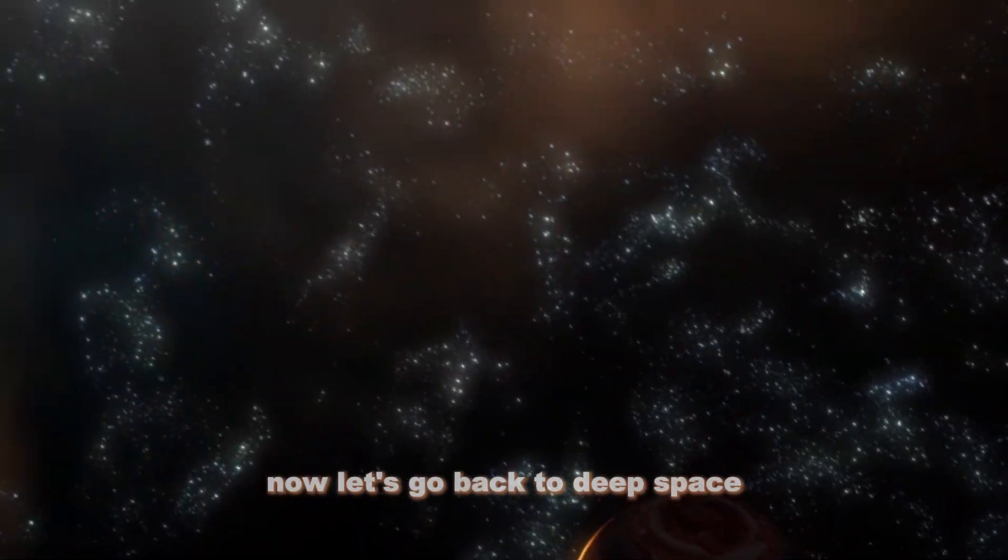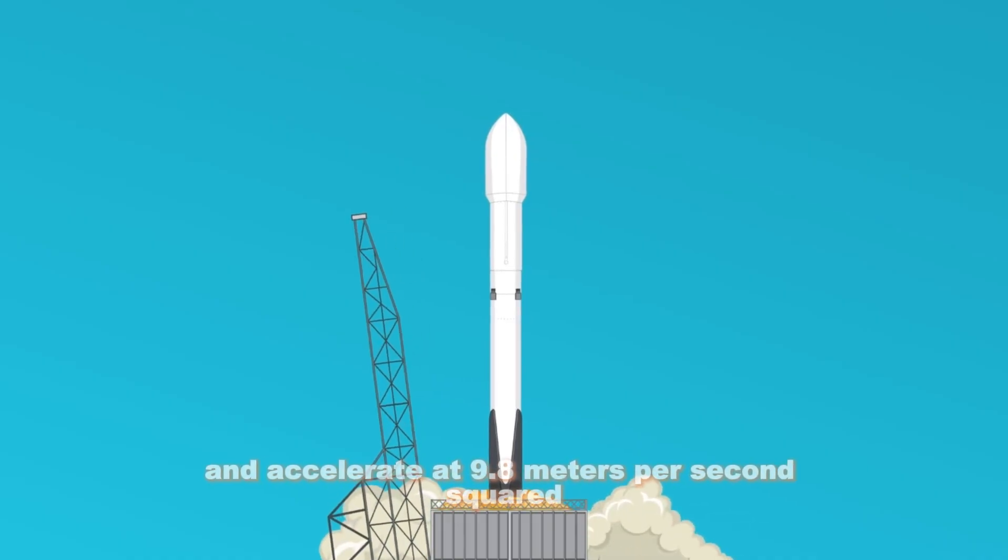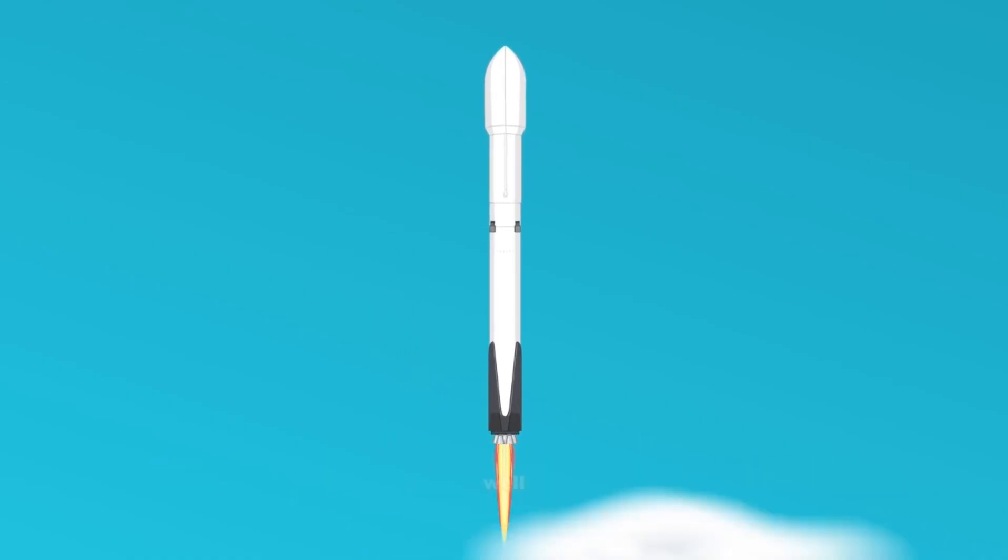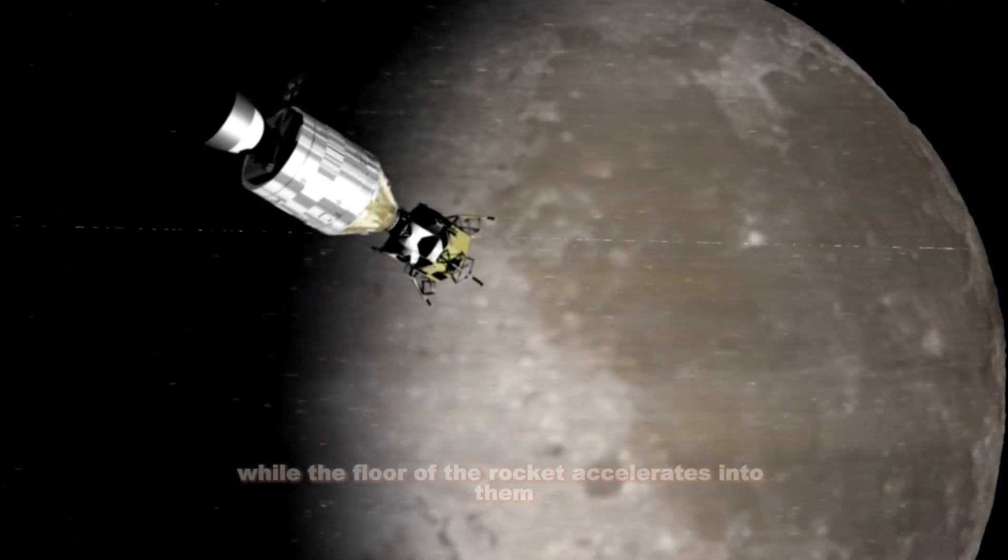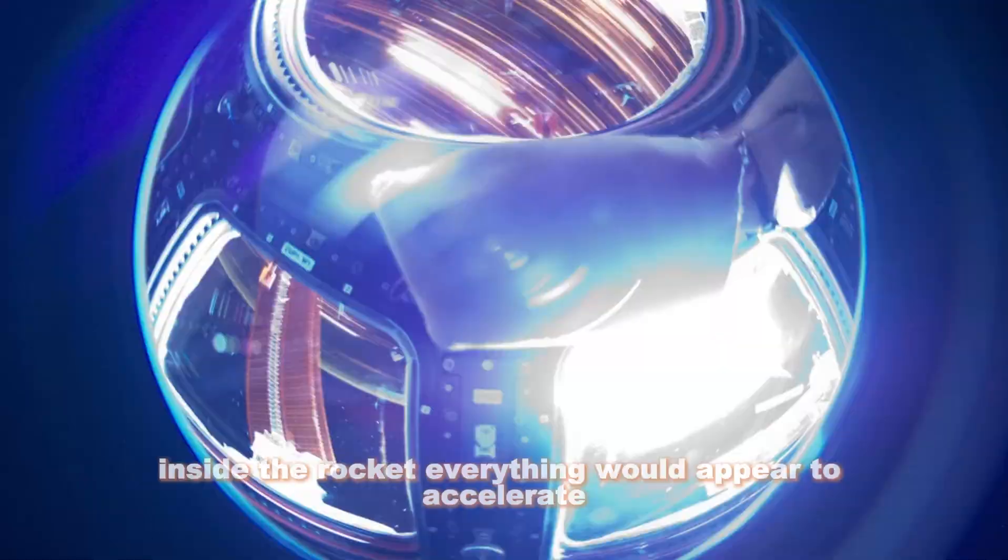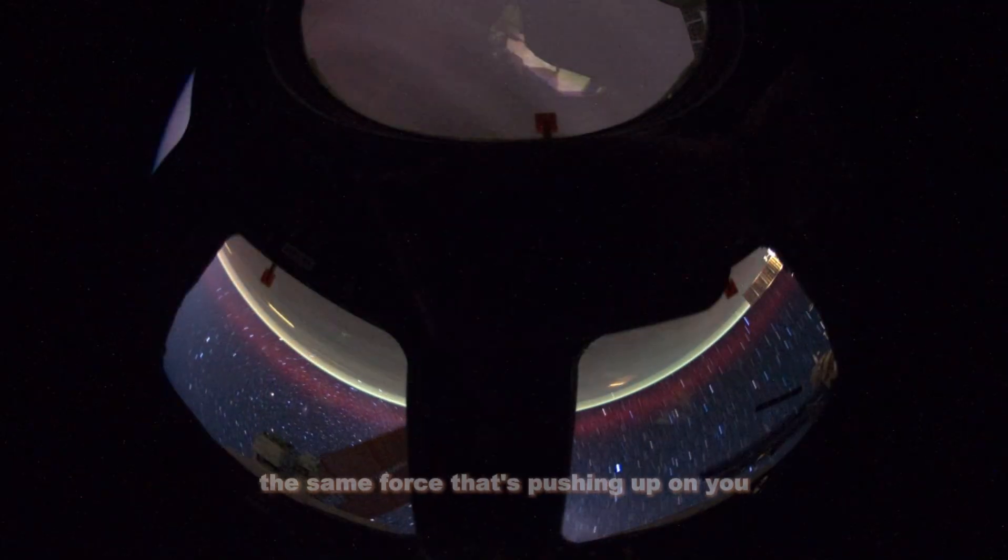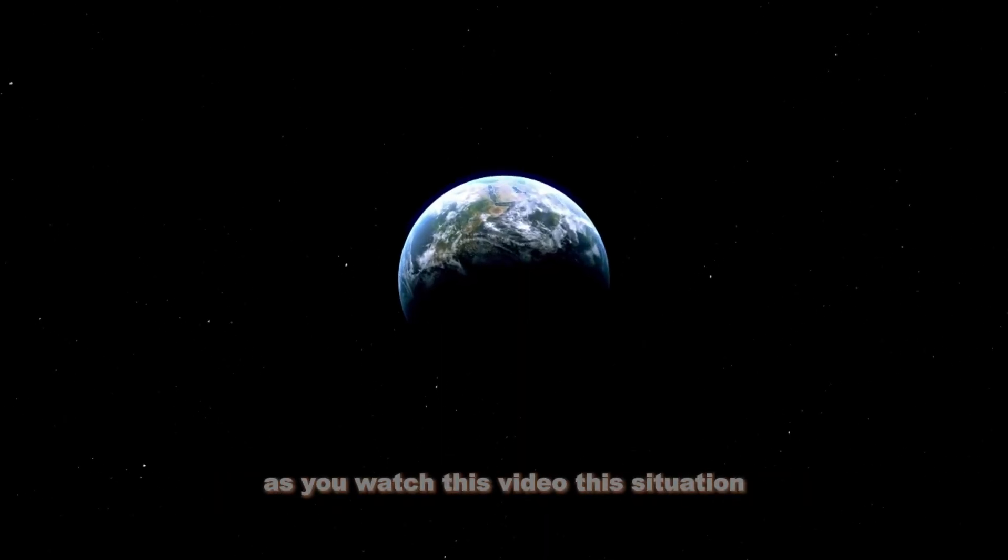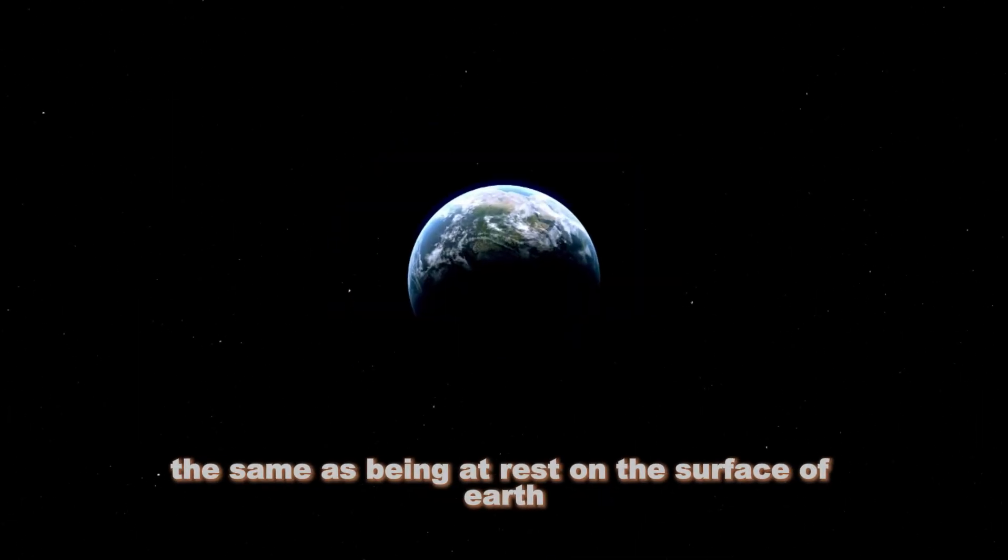Matter tells spacetime how to curve, and spacetime tells matter how to move. Now let's go back to deep space. What happens if you turn on the rocket thrusters and accelerate at 9.8 meters per second squared? Well, someone outside would see all objects remain stationary, while the floor of the rocket accelerates into them. Inside the rocket, everything would appear to accelerate down to the ground, and you would feel a force pushing up on your feet, the same force that's pushing up on you as you watch this video.